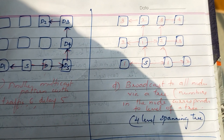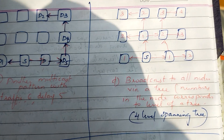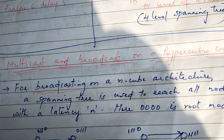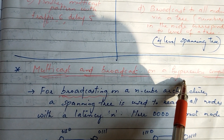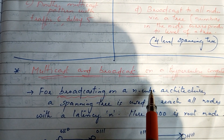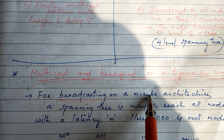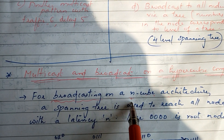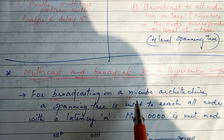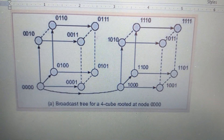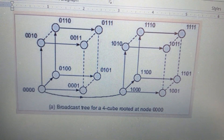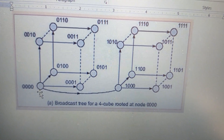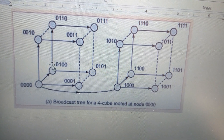Now we are going to store the four figures of the mesh connected network. Next, we are going to do the Hypercube. In the second part, we put the n-cube architecture. The n-cube has 2 raised to n nodes, so for n equals 4, that is 16 nodes. Looking at this tree, the root node is labeled 0, 0, 0, 0. We are going to broadcast from this root node.